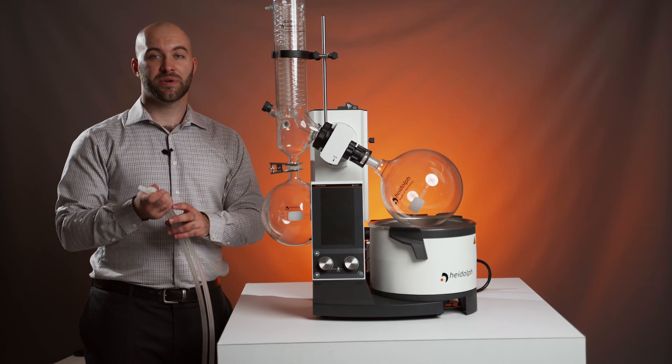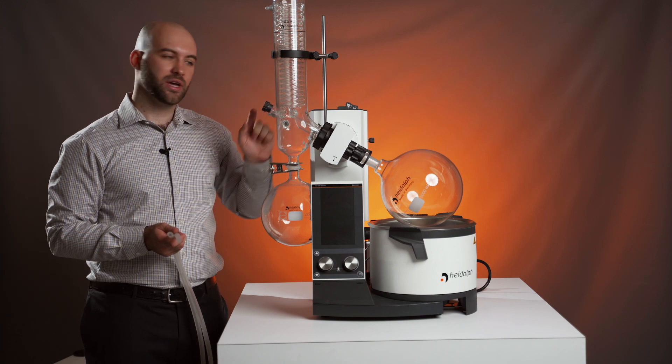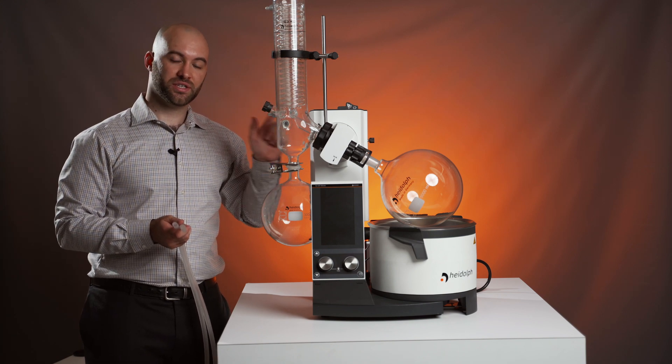Now we're going to attach the tubing that we just attached to our chiller to our condenser, and due to its dual coil design, it doesn't matter which of these two connections is in or out.